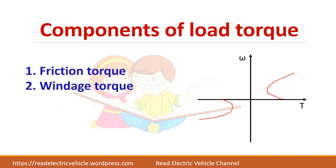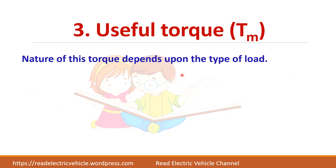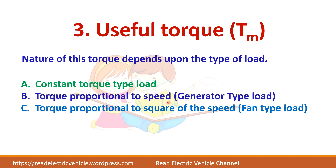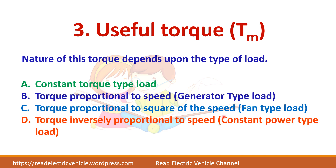One more torque component is the useful torque — the torque that does useful work. The nature of this torque depends on the type of load. Loads can be classified into four types: constant torque load, torque proportional to speed, torque proportional to the square of speed, or torque inversely proportional to speed (constant power load).